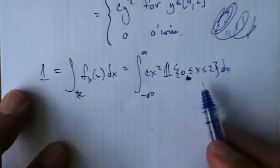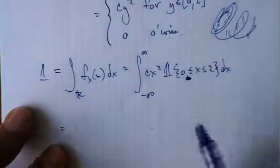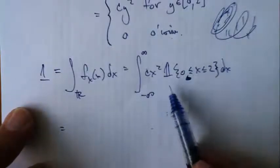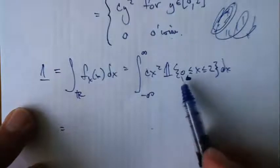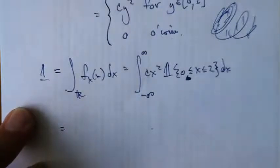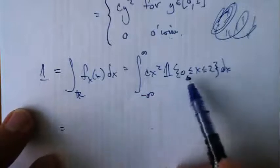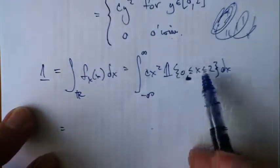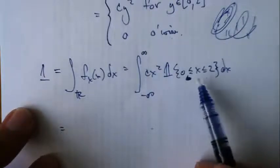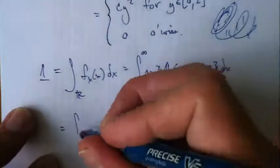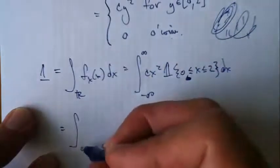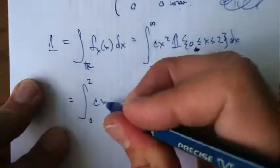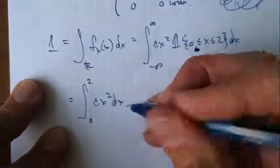So I can write this like this. What does this tell me to do? This says that the integrand is actually going to be 0 whenever my x value falls outside of this closed interval 0 to 2. So these indicator functions, when they appear as products inside the integrand, it gives me a big hint about what my limits of integration need to be. It tells me that I can write this as the integral just from 0 to 2 of c x squared dx.